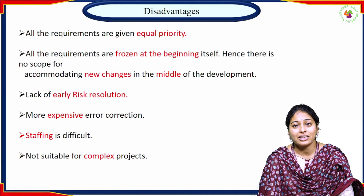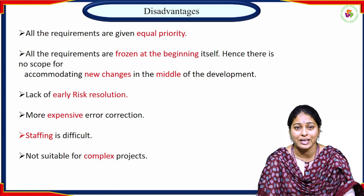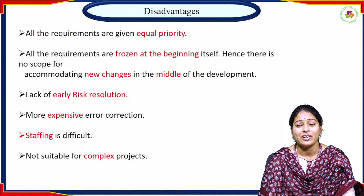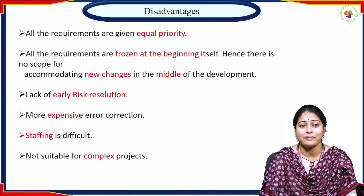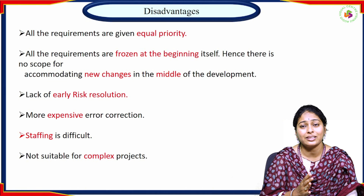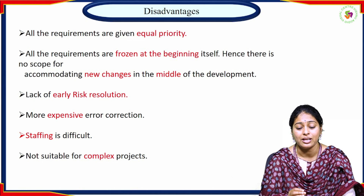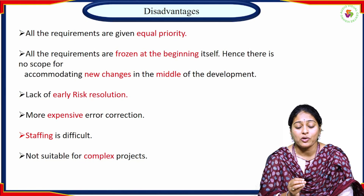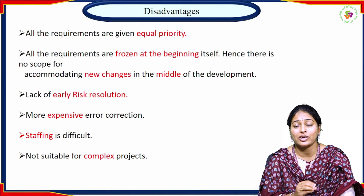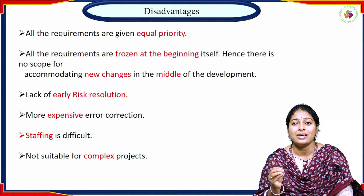Staffing is also difficult in the waterfall model. After completing the project, team members are assigned to other activities. If customer feedback is negative and the project comes back, the original staff may be unavailable and new staff must be recruited. Additionally, the waterfall model is not suitable for complex and large projects — it is only applicable for easy and short projects.